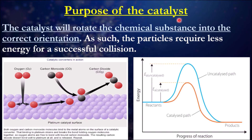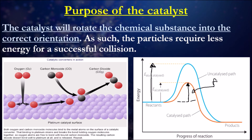Because the purpose of the catalyst is to allow for the correct orientation of collision, it also means that less energy is required for a successful collision to occur. Looking at the energy profile diagram: without a catalyst, the activation energy is quite high. But if you introduce a catalyst into the reaction, you can lower the activation energy, which means you also get a faster reaction - it transitions more quickly from reactants to products. So the purpose of the catalyst is to decrease the activation energy.